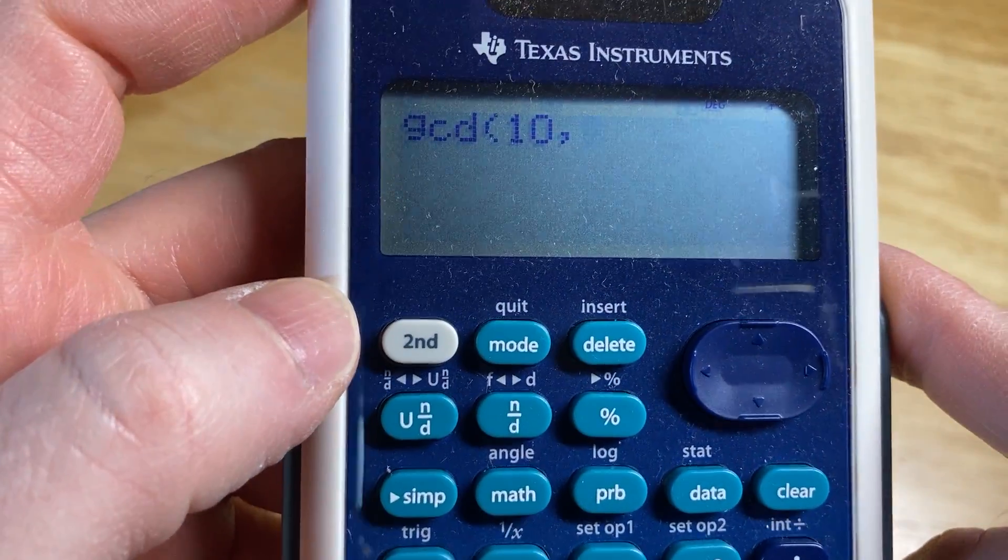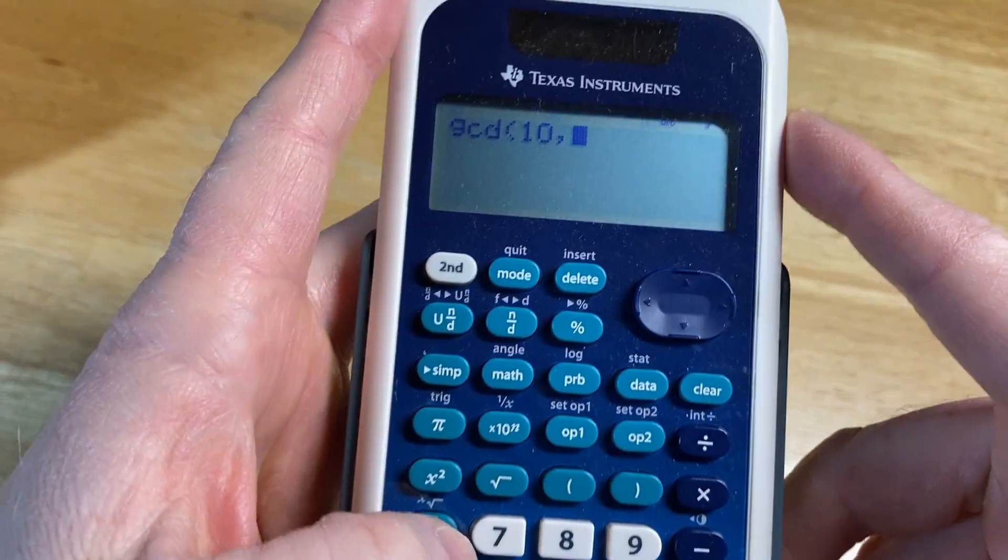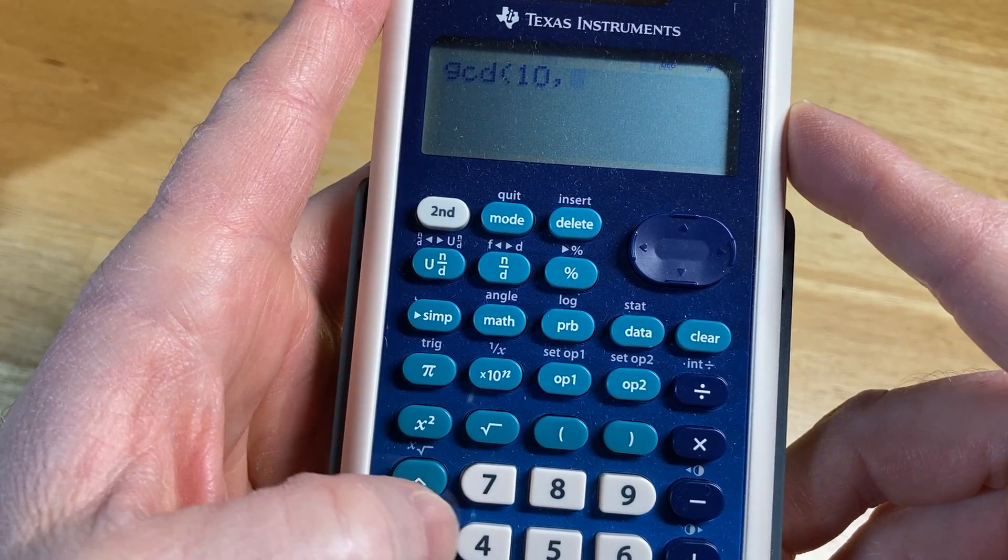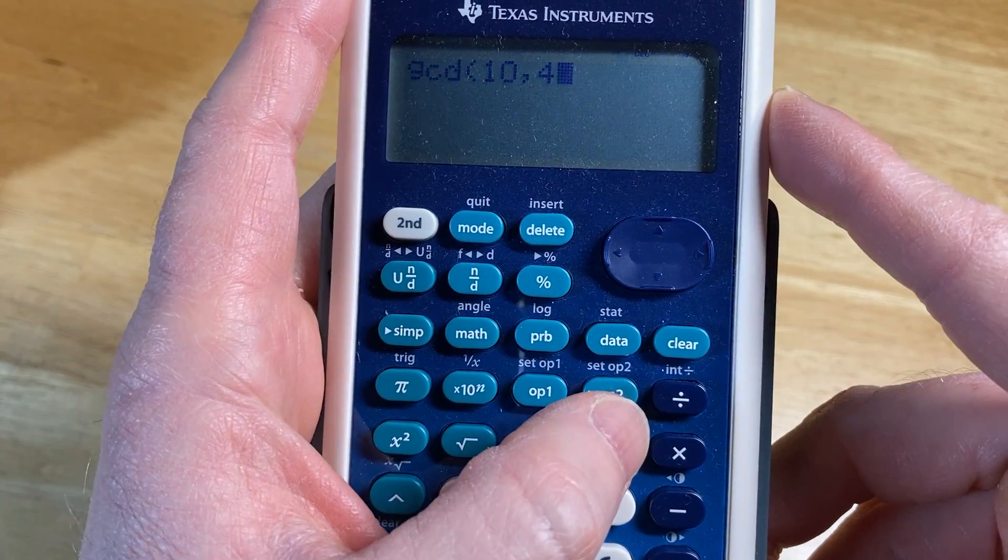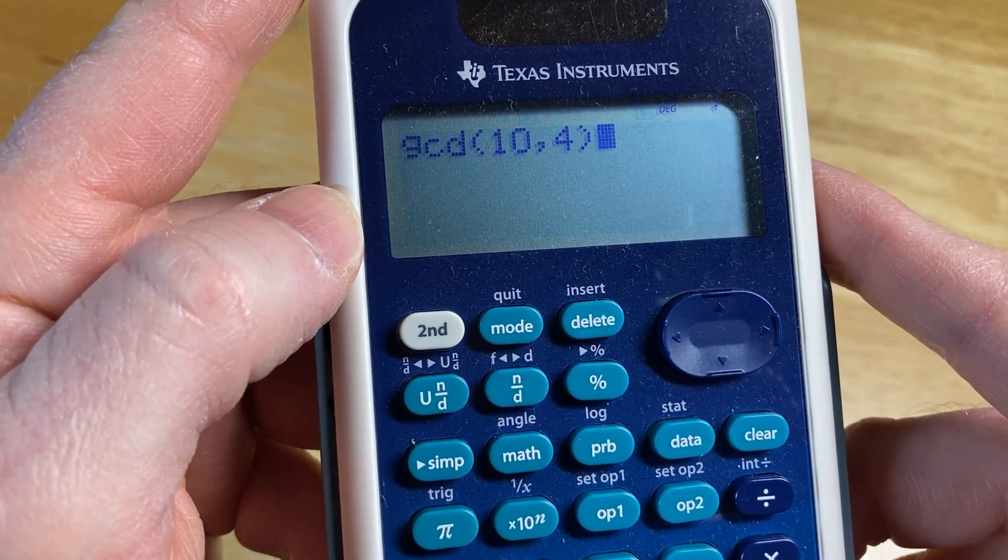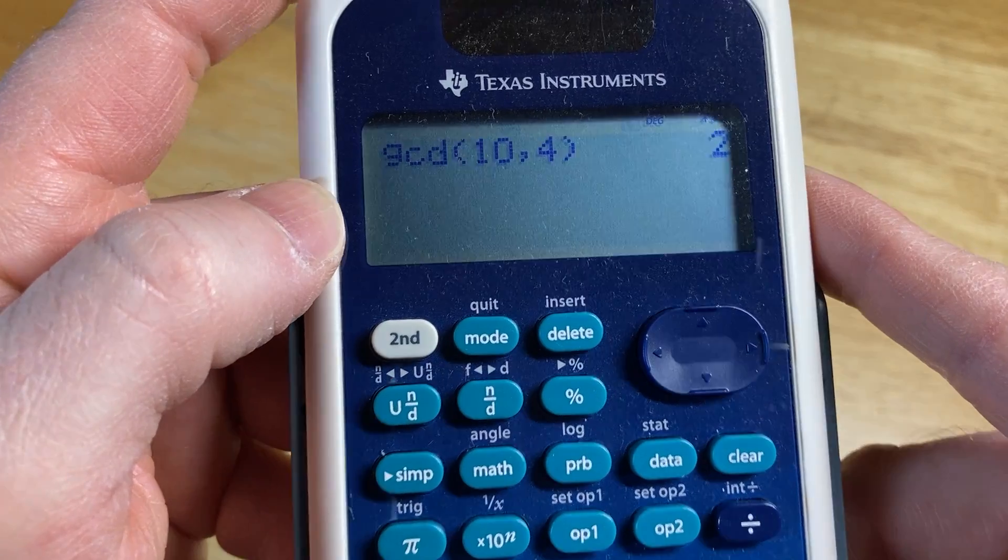And then we need to press the number 4, because we said the GCD of 10 and 4, and then let's close the parentheses, and then we'll press enter one time, and there is the number 2.